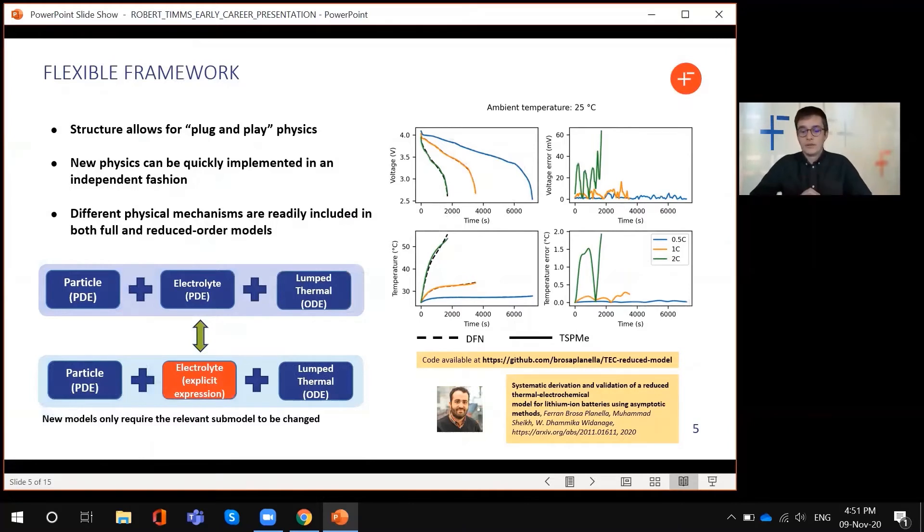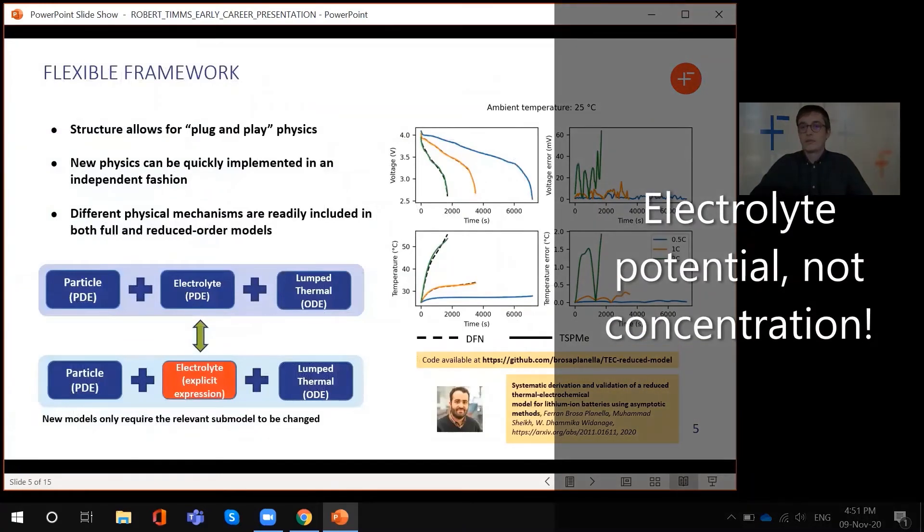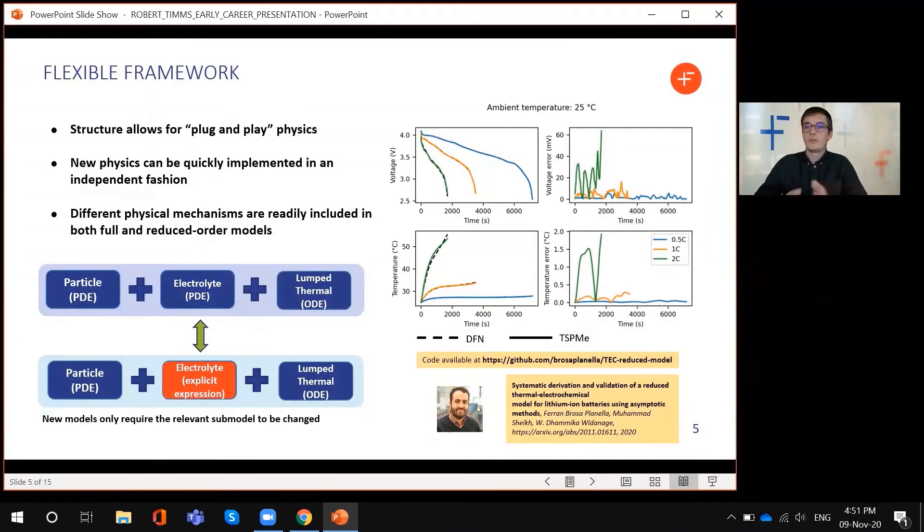One of the models he describes in that paper replaces the partial differential equation for the electrolyte concentration with an explicit expression. To include this in PyBAMM, all he needed to do was code up that particular sub model and slot it into the existing single particle model that was already there. It's very easy to develop some new physics or new descriptions of physics in an independent fashion and start using it with other stuff that's already existing in the framework. On the right here, we've just got some images from that paper showing the comparison between the Doyle-Fuller-Newman model and the single particle model of the electrolyte.